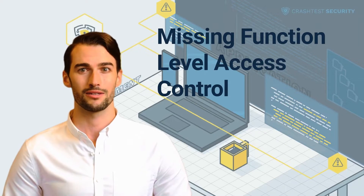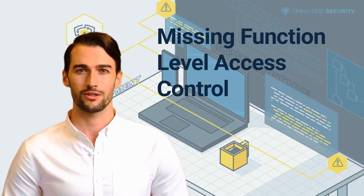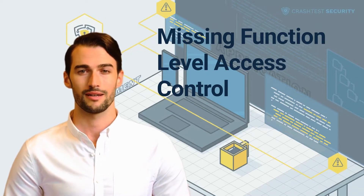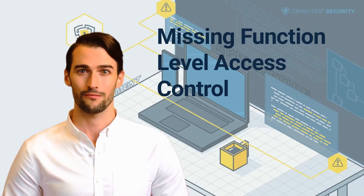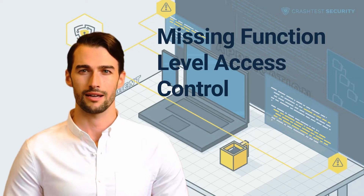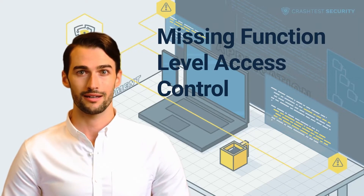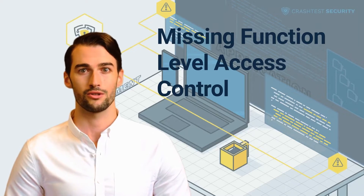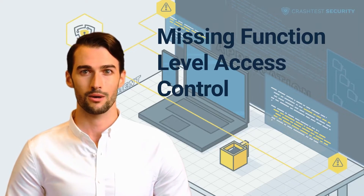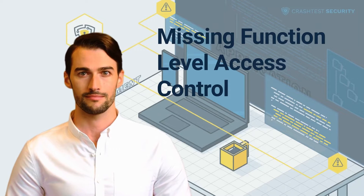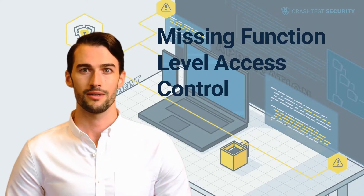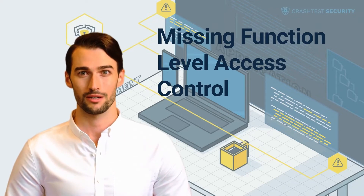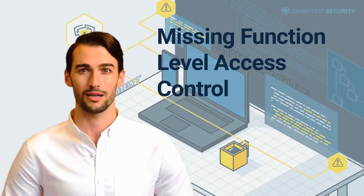Function-level access control enables a flexible hierarchical authorization check since it implements resource access control decisions based on task requirements. Unfortunately, an application with the access control security vulnerability allows an unauthenticated user to perform unauthorized actions on restricted resources by exploiting code and configuration settings flaws. This article discusses the missing function-level access control vulnerability, its impacts on application security, and how to protect web applications.